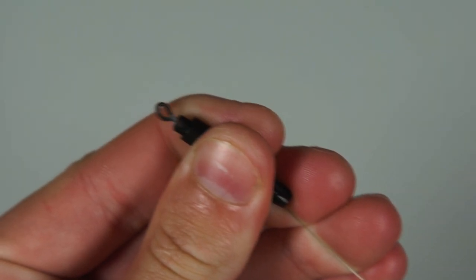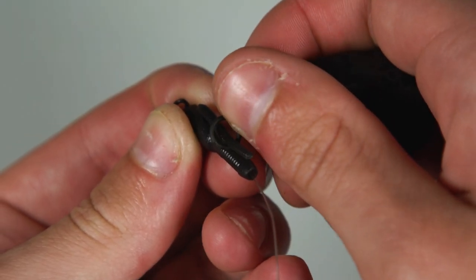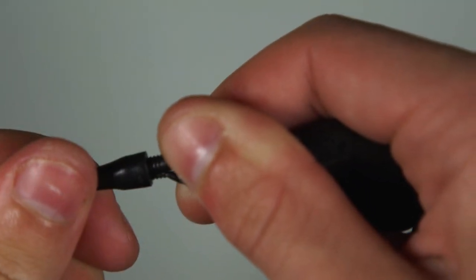You can now pull the swivel into the back of the lead clip. It should click into place. Take the swivel lead and thread it onto the lead clip and push the tail rubber lightly over the top.